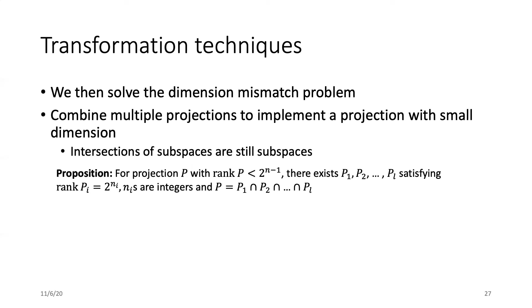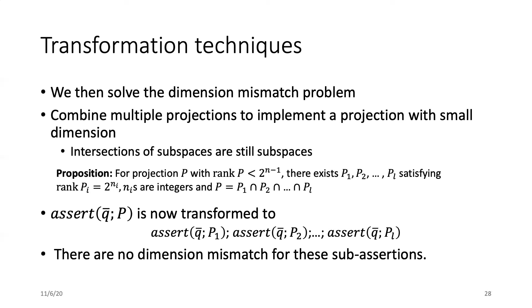We now solve the second constraint, the dimension mismatch issue. We have two cases here. When the rank of P is small, which means it's smaller than 2^(n-1), we can use the intersection of subspaces to formulate a smaller subspace. And we have a proposition for this. When this rank P is smaller than 2^(n-1), there exists an array of projections, and each of which has a rank of 2 to the power of an integer. And the intersection of their subspaces is exactly the subspace of the original projection. Using this proposition, an assertion of rank smaller than 2^(n-1) can be converted into a row of sub-assertions without dimensional mismatch problems.